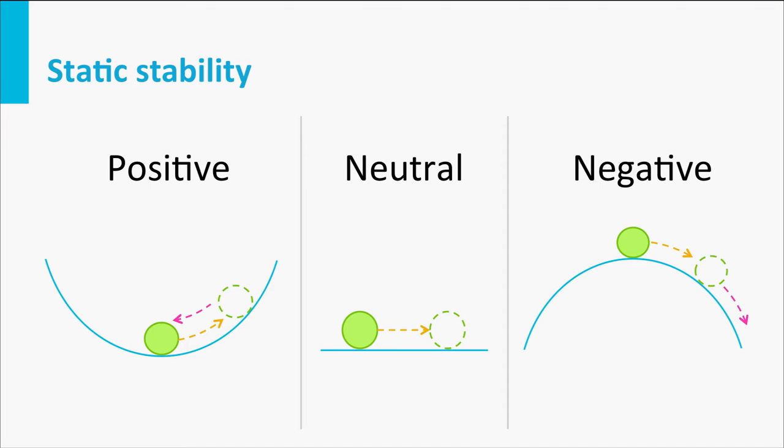The alternatives are: if it were a flat surface and you move it to the side, nothing happens — that's neutral static stability, where the initial reaction is zero. And of course if something is unstable, that's what we call negative stability, where the original deviation results in a force which makes it even worse.